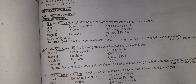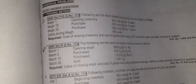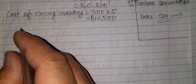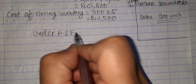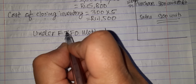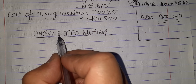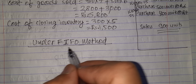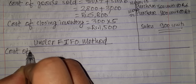This is the LIFO method result. Now we will learn the FIFO method for this same question. FIFO means first in, first out — the first goods purchased are the first goods sold.